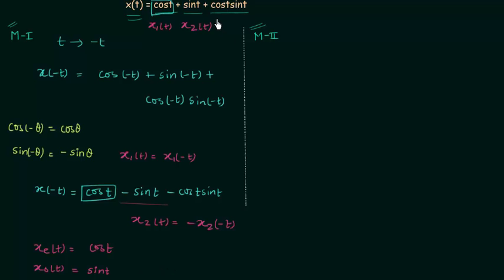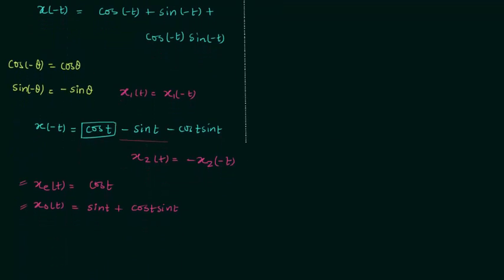Now we check cos(t)sin(t). The original has +cos(t)sin(t) and after time reversal we have -cos(t)sin(t), so cos(t)sin(t) is also an odd component. Therefore, the odd component xo(t) contains sin(t) + cos(t)sin(t). In this way we can find the even and odd components of x(t). We can also verify this using the formula.